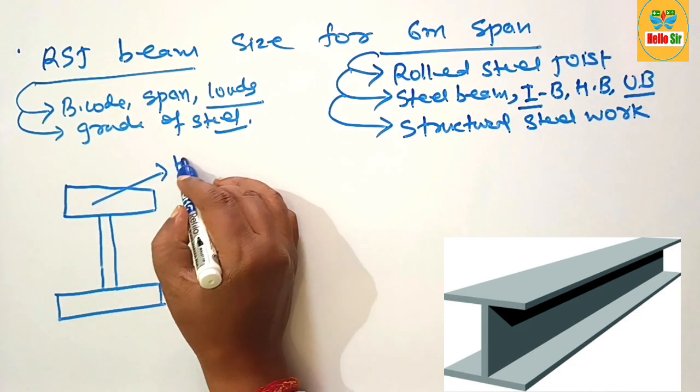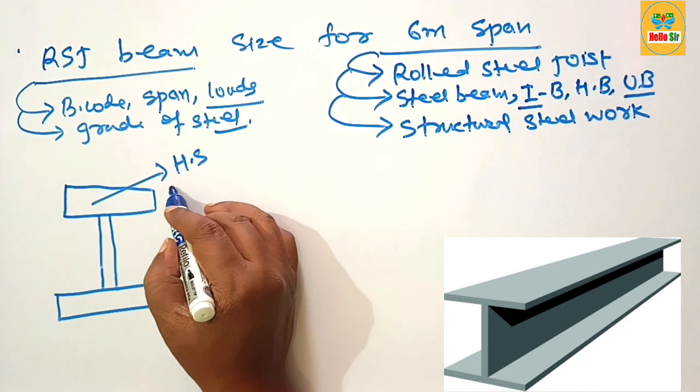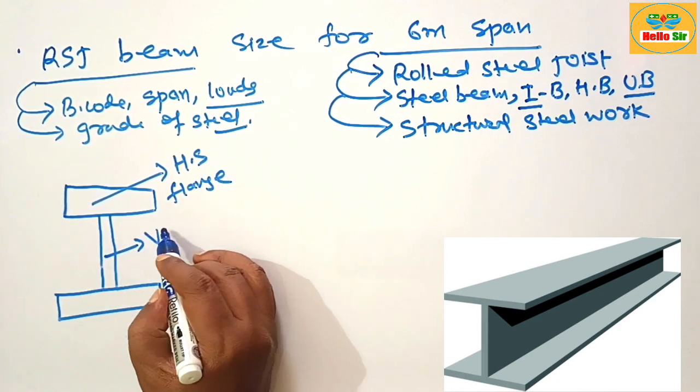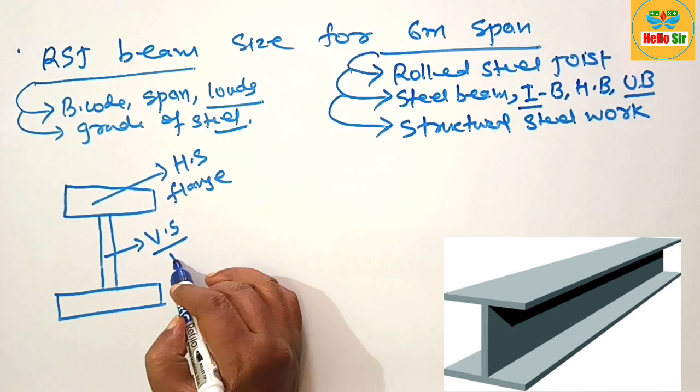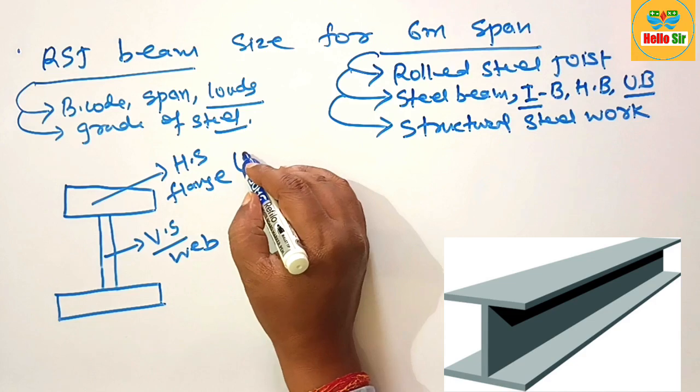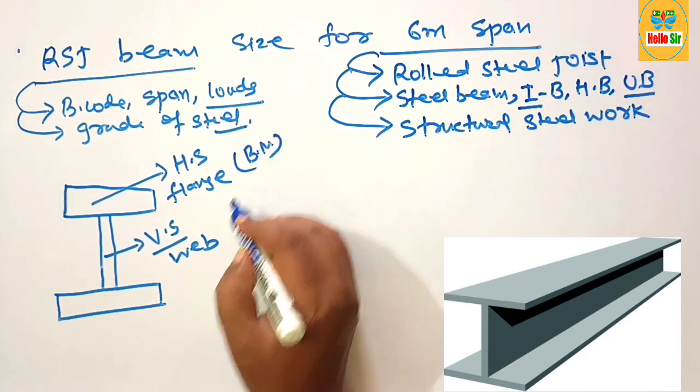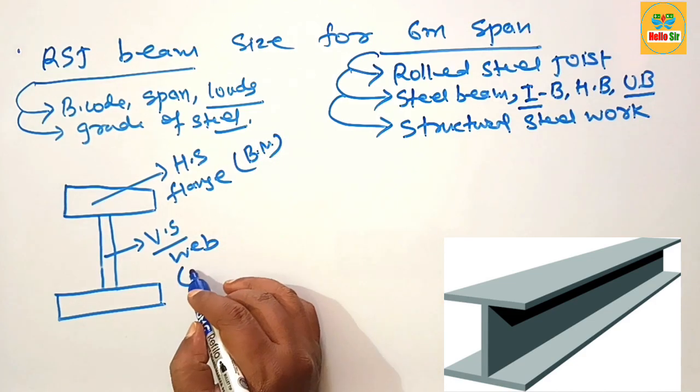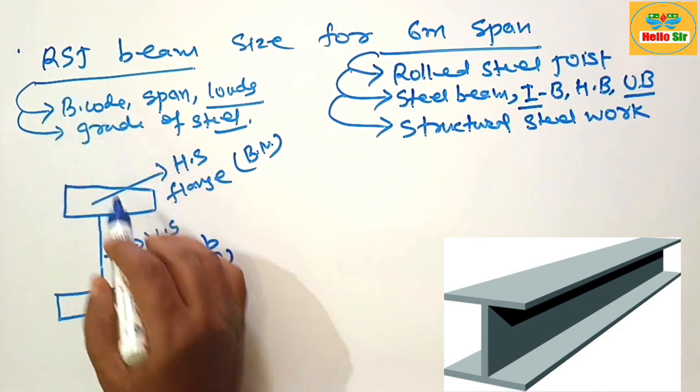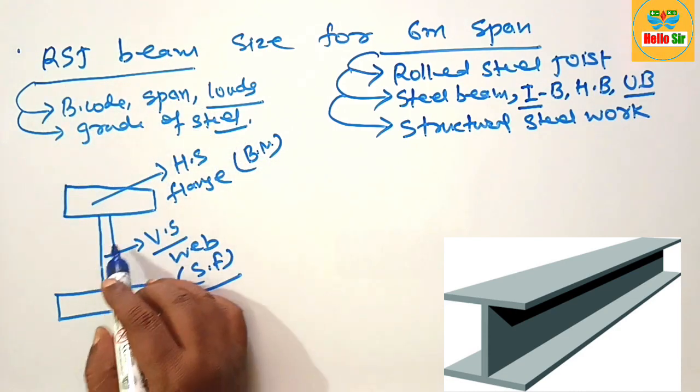This is the horizontal section known as flange and this one is vertical section or height known as web. The flange resists the bending moment coming on it and the web resists the shear forces. This one is the dimension of RSJ or I beam.